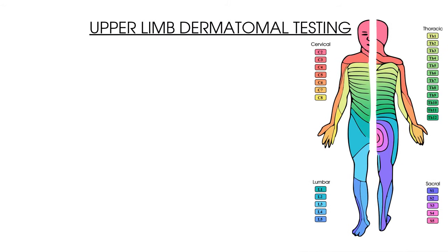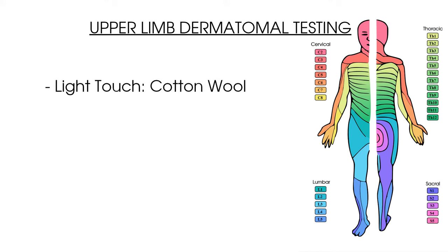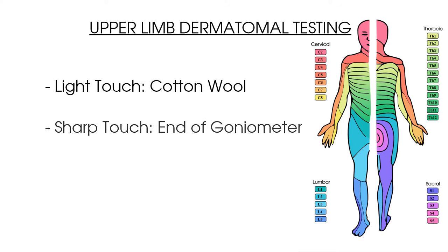To summarise upper limb dermatomal testing: use the areas from C2 to T1 shown in the diagram. Use a piece of cotton wool to assess light touch; ask the patient to close their eyes, run the cotton wool through the dermatomal areas, and ask if sensation feels the same on both sides. If it doesn't, ask how it's different and gauge the percentage difference — for example, the C6 dermatome on the left has 60% sensation compared to the right. If cotton wool testing shows no abnormalities but you remain concerned about sensation deficit, proceed to sharp and vibration stimuli testing.